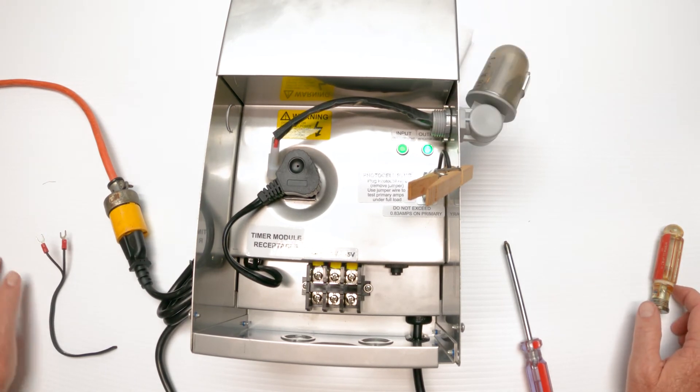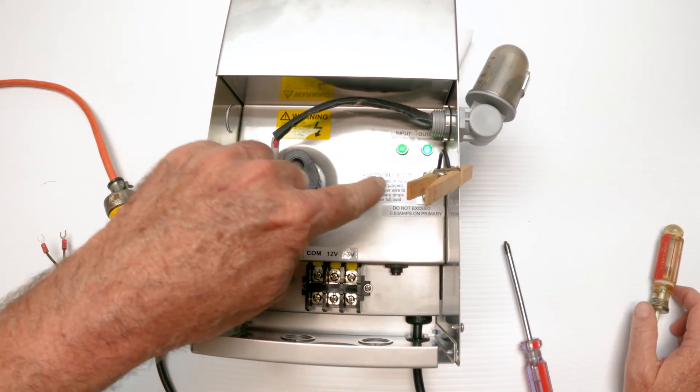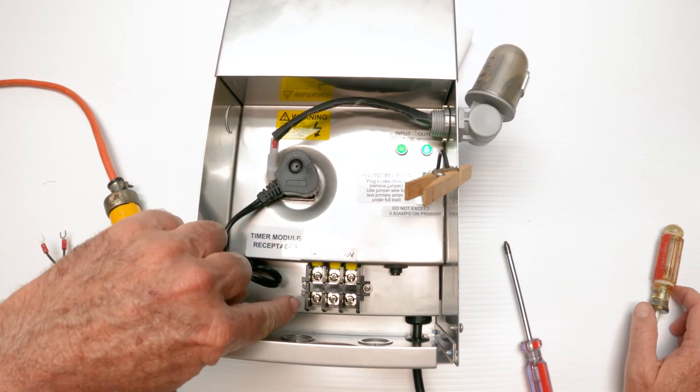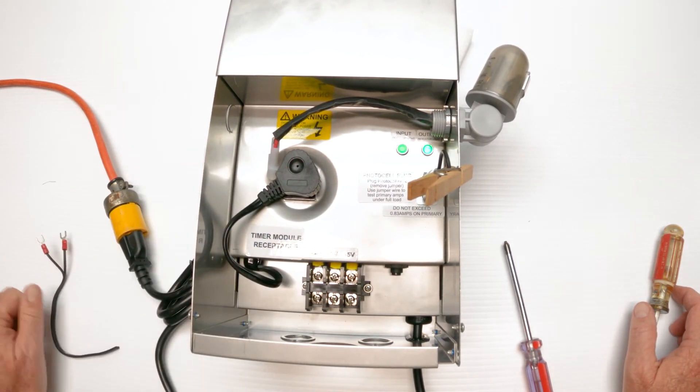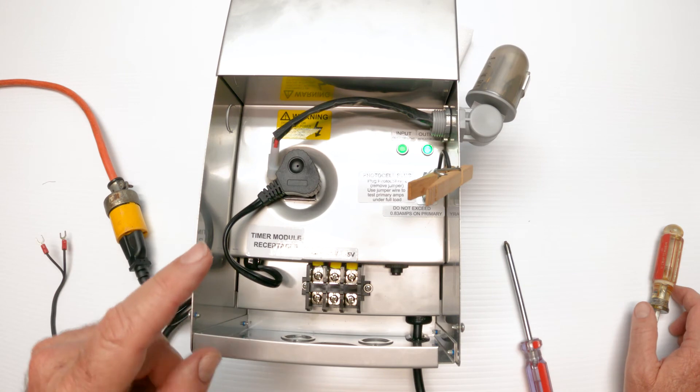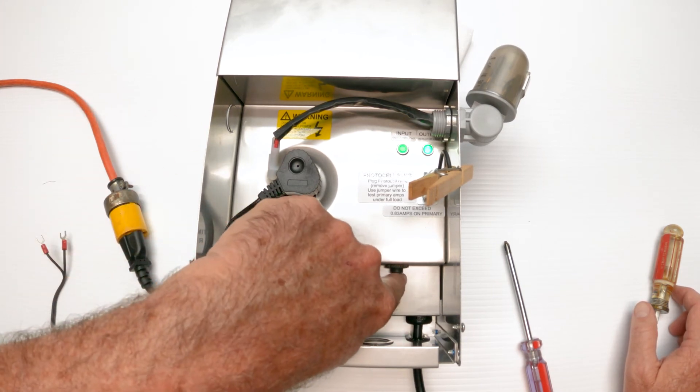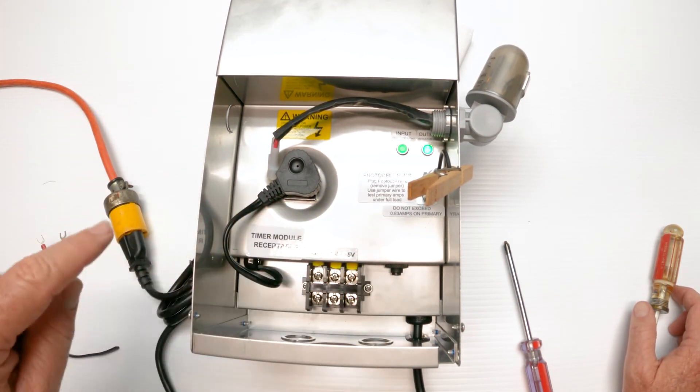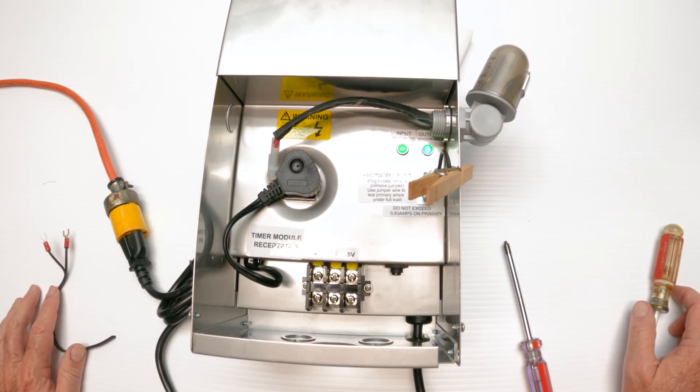What this tells me is the transformer works with the variables removed. So the problem was possibly the timer, possibly the photo cell, or possibly there's a short out in the field. If there's a short out on the field, most likely this little circuit breaker would have popped and you'd have to push it in. It's a great indicator if there's a problem in the field.